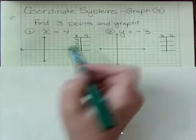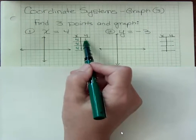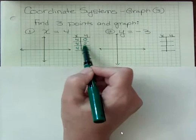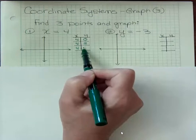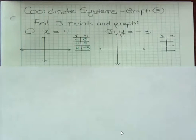And if x is 4, then y can be whatever we want it to be: 0, 2, negative 3, whatever. It doesn't matter. We can choose 1, 2, 3, 0, 1, 2, whatever.